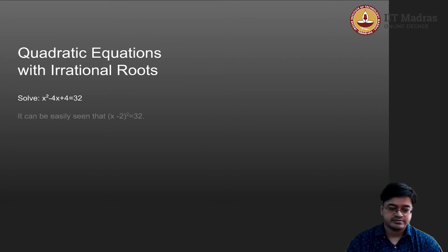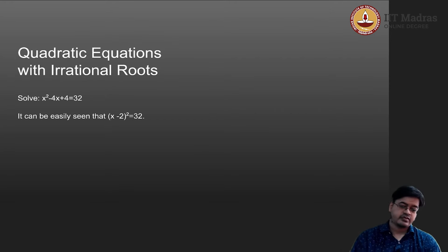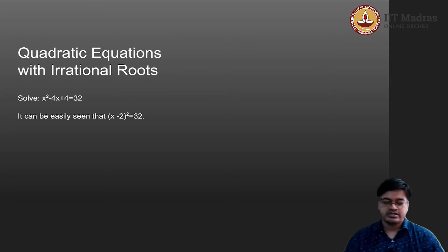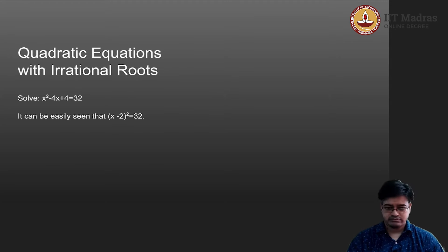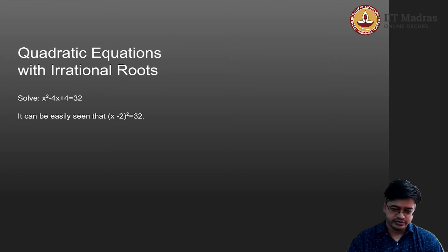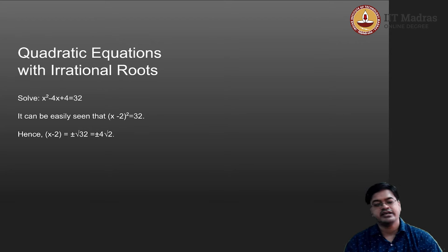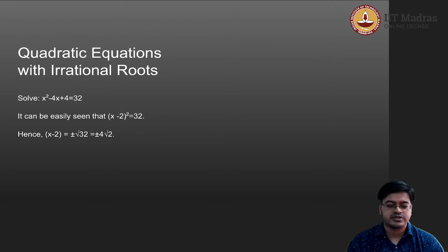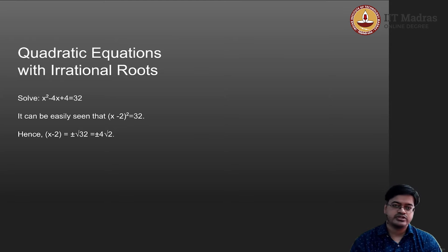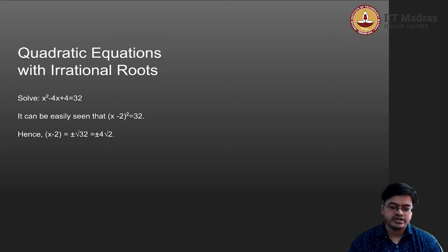So in such a case, what will happen? You will proceed in a similar manner: (x minus 2) whole squared equals 32. You take the positive square root on the left hand side, giving plus or minus square root of 32. Square root of 32 can be decomposed into 16 times 2, and square root of 16 is 4, so it is plus or minus 4 root 2.